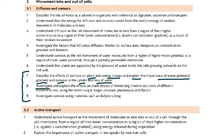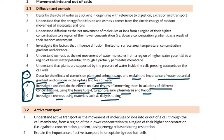We will also investigate — whenever it's an investigate, you know we have to do the practical procedures. We will investigate and explain the effects on plant tissues of immersing them in solutions of different concentrations, using the terms turgid, turgor pressure, plasmolysis, and flaccid. We will also investigate osmosis using materials such as dialysis tubing. These practical topics will be handled at the end of the video.